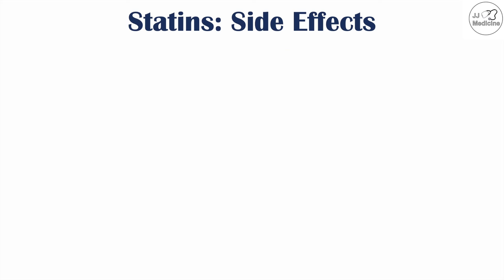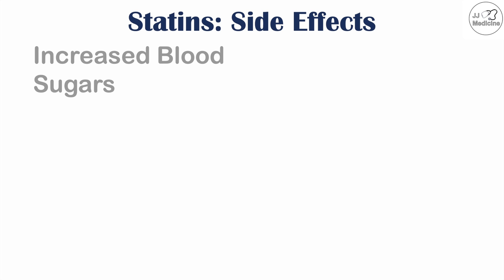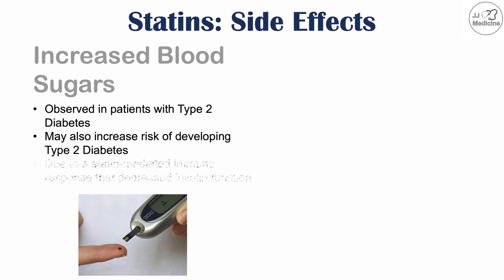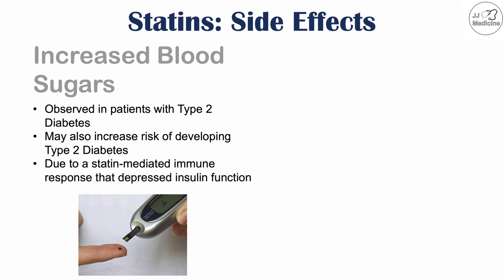Side effects definitively caused by statins include increased blood sugars. This has been observed in patients with type 2 diabetes, and there is evidence suggesting statins may increase the risk of developing type 2 diabetes. This appears to be due to statin-mediated immune responses that depress insulin functioning, though the full outcomes of this effect have not been thoroughly studied.